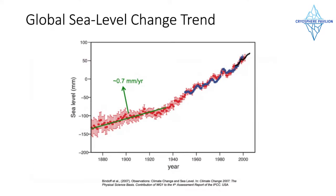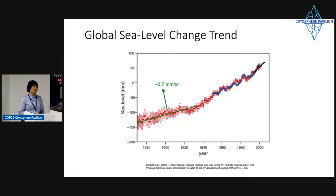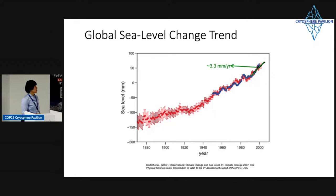What will sea level look like in the future in response to global warming? Tide gauge records suggest that sea level has been rising at 0.7 millimeters per year for the first part of the 20th century, at 2 millimeters per year toward the mid-to-end of the 20th century, and right now we're seeing about 3.3 millimeters per year of sea level rise.